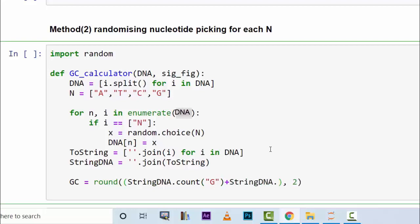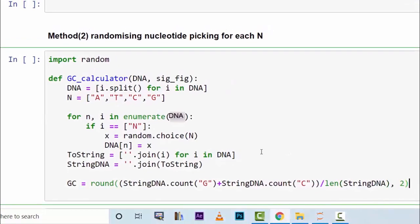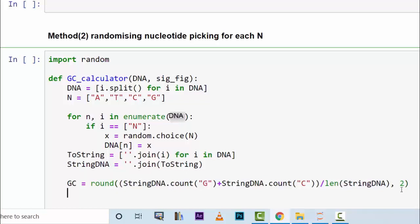Plus StringDNA dot count C. And this whole thing is divided by length of StringDNA. Now if there's no problem with the brackets and parentheses, let's say this is fine, this one is fine. So everything is going to be neat.